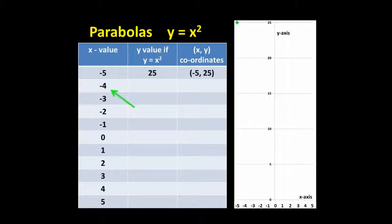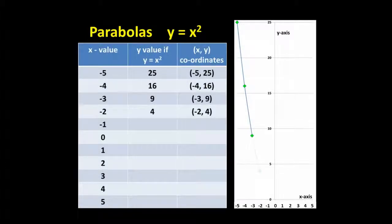Negative 4 squared is 16, so the point we plot is at (-4,16). Negative 3 squared is 9, so our next point is at (-3,9). If we keep plotting all the points, we end up with a smooth symmetrical curve. This curve is called a parabola.